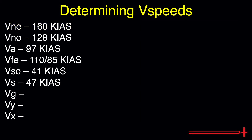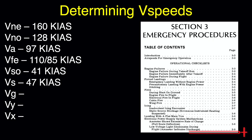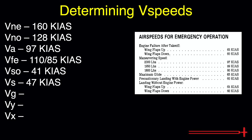These are the V-speeds we can identify in section 2. Moving on to section 3 of the POH, emergency procedures, look for the airspeeds for emergency operations section found just below the intro. Once there, we may find our max weight best glide speed of 65 knots indicated. This speed should result in the furthest horizontal distance per unit of altitude lost during engine-out procedures.